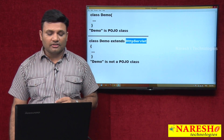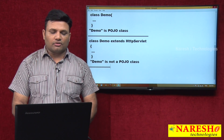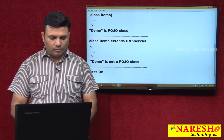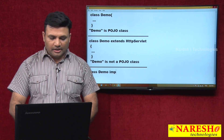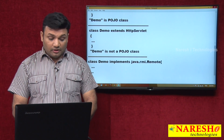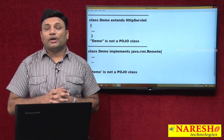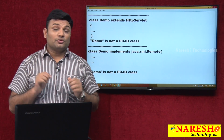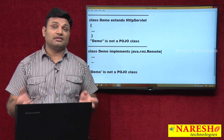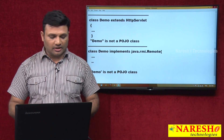Demo is not a POJO class because it extends from the Servlet API. Now: class Demo implements java.rmi.Remote. Demo is not a POJO class. Why? Because it implements one RMI interface — Remote is an RMI technology interface. So that is why it is not a POJO class.